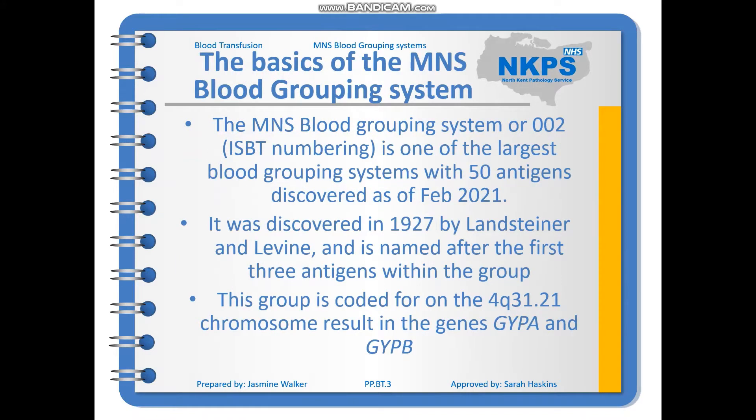The MNS blood group system, or 002, is one of the largest blood grouping systems, with 50 antigens discovered within it as of February 2021. It was discovered in 1927 by Landsteiner and Levine, and is named after the first three antigens within the group.